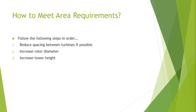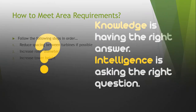To summarize how to meet area requirements, we can follow these steps: first, reduce the spacing between turbines if possible while minimizing shadow effects; second, increase the rotor diameter; and third, increase the tower height.